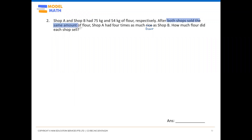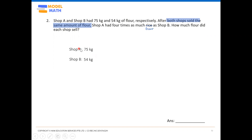Both shops sold the same amount of flour — there is something that remains the same throughout, and we'll focus on that later. Let's start by recording Shop A and Shop B's initial amounts: 75 kg and 54 kg respectively. No model is needed since these values are already given — just record them straight away.